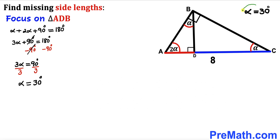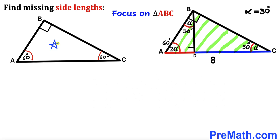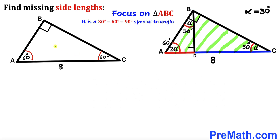So angle alpha is 30 degrees. That means angle ABD is 30 degrees, angle DCB is 30 degrees, and angle DAB is 2 times alpha which is 60 degrees. Now let's focus on the big right triangle ABC — we can see it is a special 30-60-90 triangle, since the angles are 30, 60, and 90 degrees.